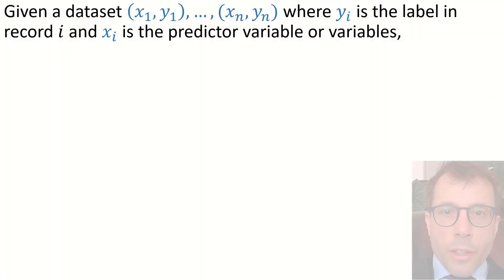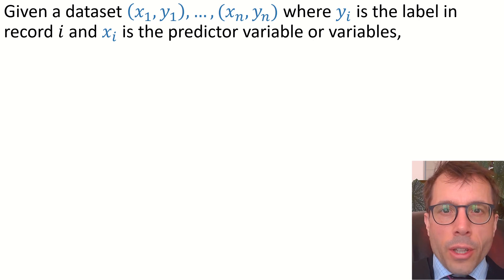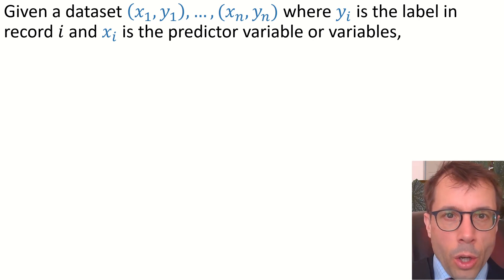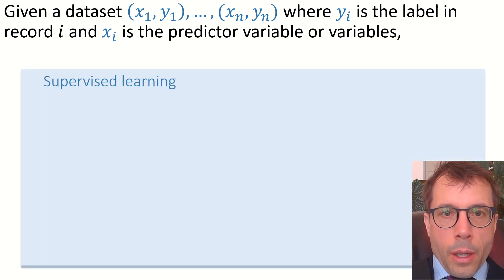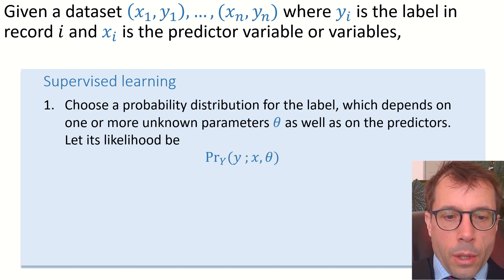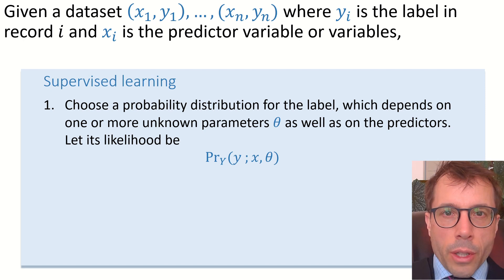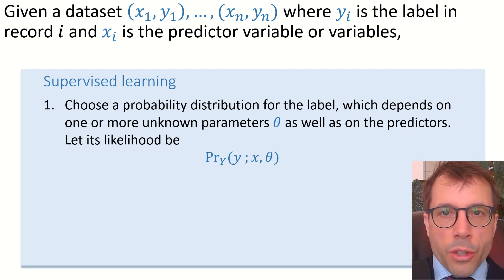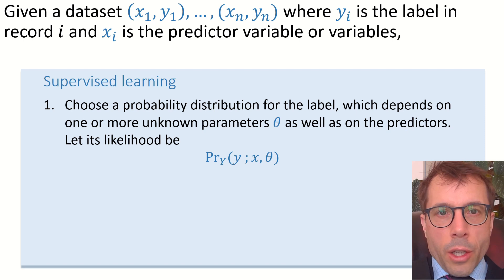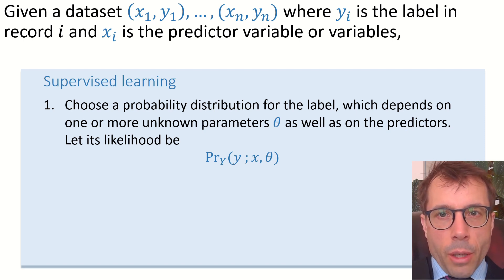Let's write all this out more formally. We'll assume we're given a data set where yi is the label for record i and xi is the predictor variable, or maybe a tuple consisting of several predictor variables. First, we choose a probability model for the label variable. This probability model should depend on one or more unknown parameters theta, which we want to estimate, as well as on the predictor variables, which we know.